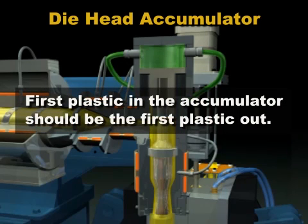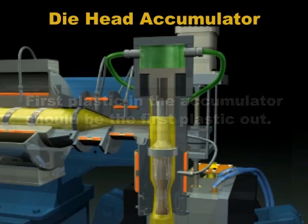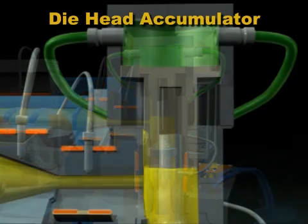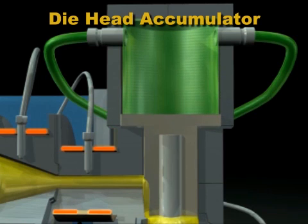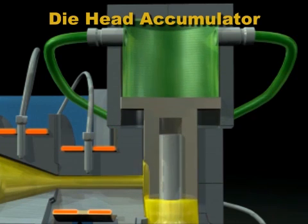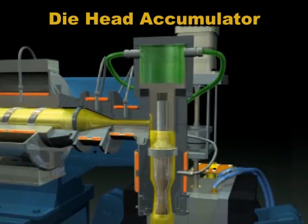This accumulator has a vertical slot at the side of the ram that continuously directs the plastic from the extruder into the base of the ram as the ram rises, so that the first plastic into the accumulator is the first plastic out.